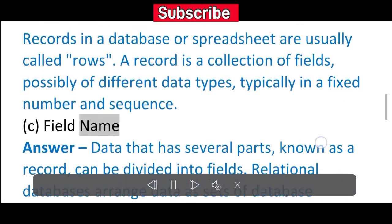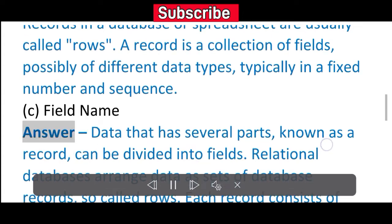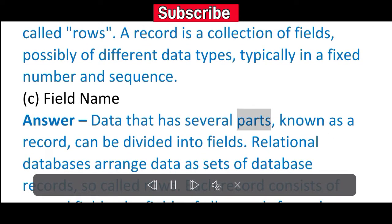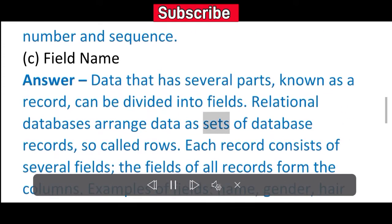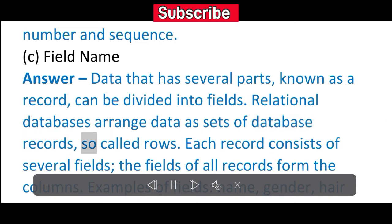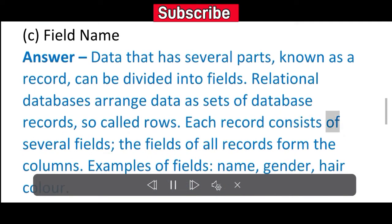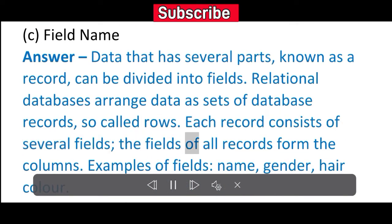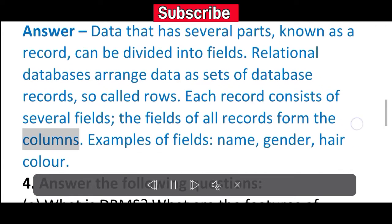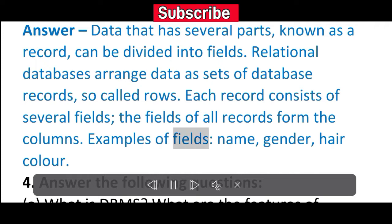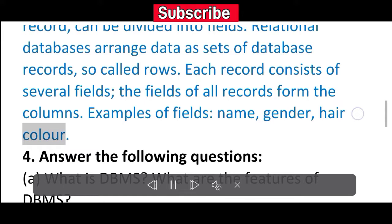C. Field Name. Answer: Data that has several parts, known as a record, can be divided into fields. Relational databases arrange data as sets of database records, so-called rows. Each record consists of several fields; the fields of all records form the columns. Examples of fields: name, gender, hair color.